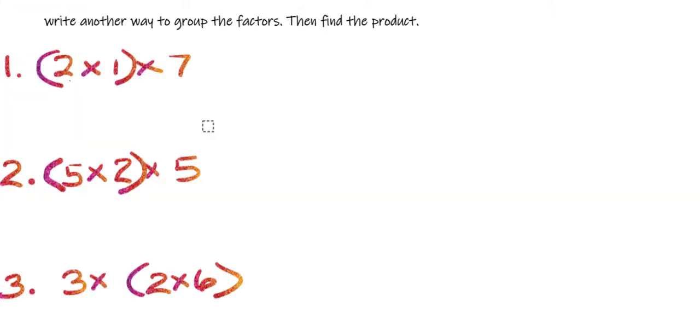So now let's go ahead and practice. Write another way to group the factors, then find the product. Let's find another way to group the factors. So I have 2 × 1 × 7. Instead of doing 2 × 1 × 7, what I'm going to do is 2 × 7 × 1. Let's try that and see how it works. So we work out whatever is in the parentheses first.